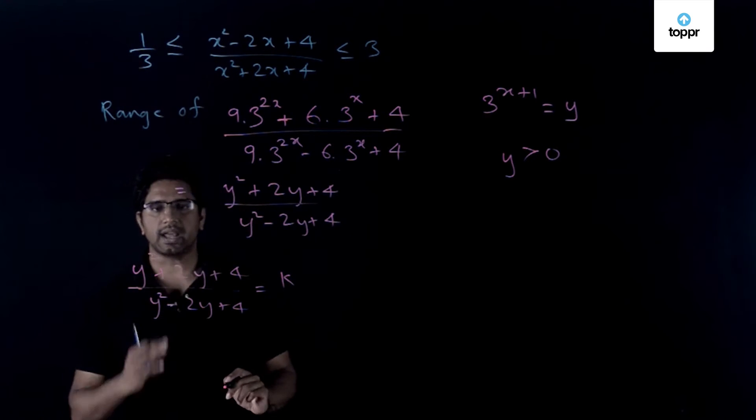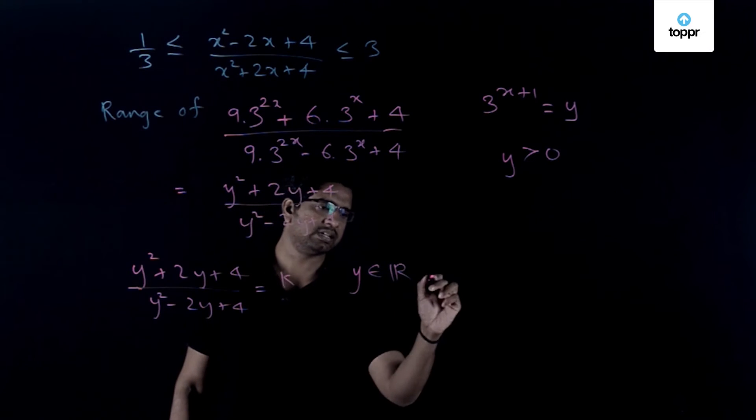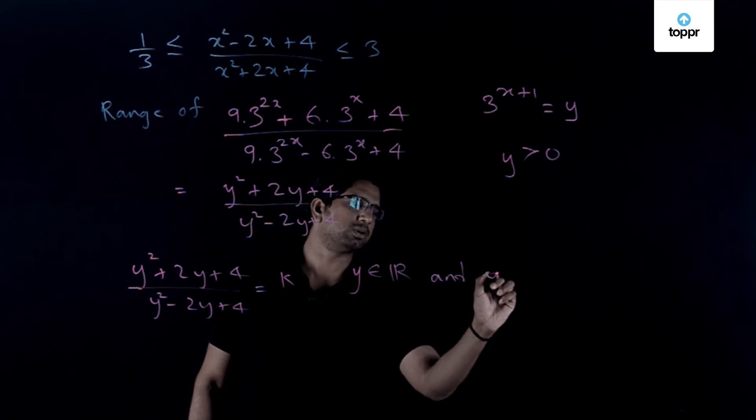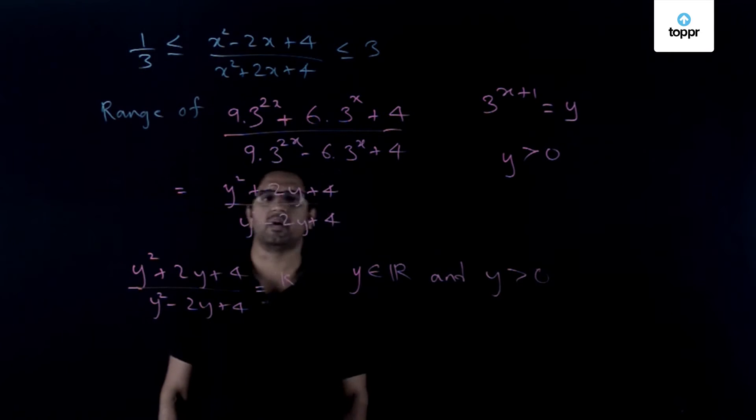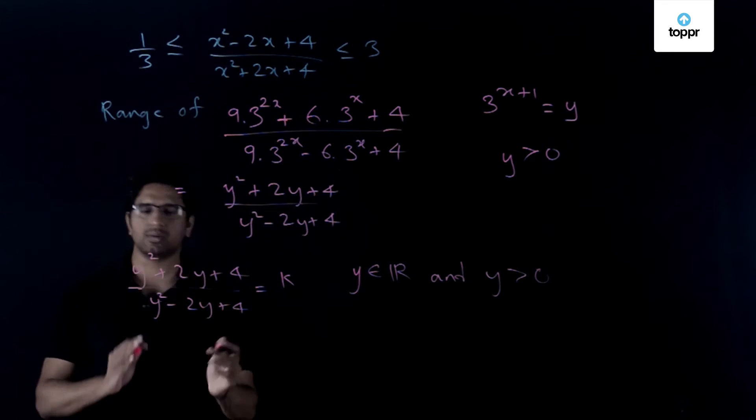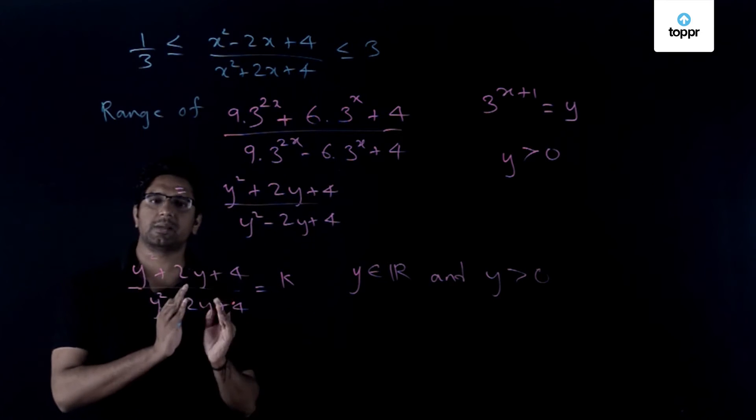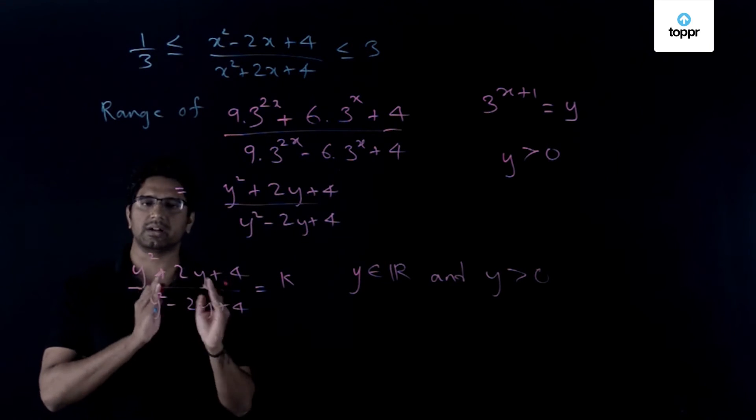Now what is the condition that we have to put? We need to of course be that y should be a real number and further we need to put the condition that y should also be a positive real number. So once you make that, we know what is the standard procedure to get the value of k. You cross multiply and write it as a quadratic and put the conditions.